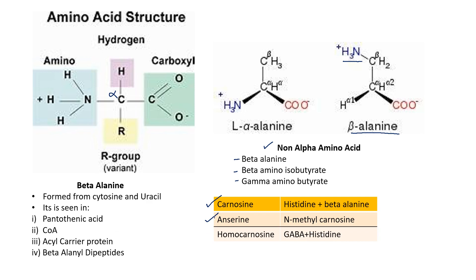There is another dipeptide called homocarnosine. The name is very similar to carnosine but it does not contain beta-alanine — instead it contains GABA. Please remember that all three of these contain histidine. Carnosine and anserine are important in skeletal muscle function.